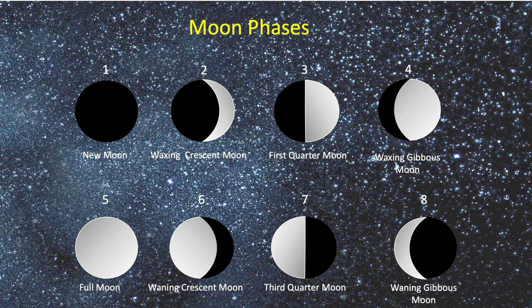The phases of the moon work in a cycle starting with the new moon. A complete cycle from new moon to full moon takes 29 and a half days. There are eight phases of the moon: the new moon, waxing crescent, first quarter, waxing gibbous, full moon, waning gibbous, third quarter, and waning crescent.